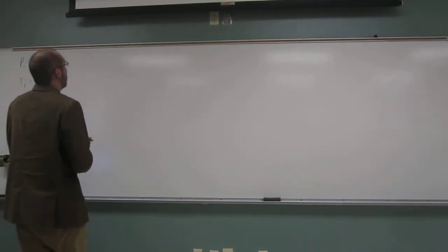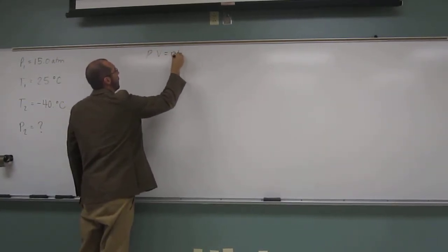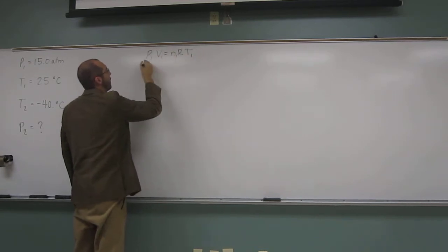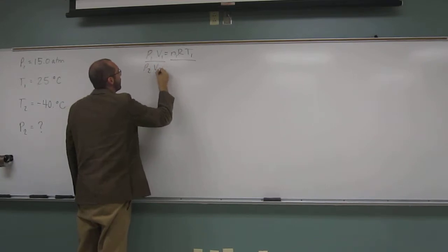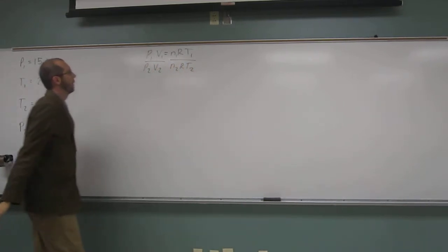So when we do that, what do we do? We say PV equals nRT and put ones below everything but the Rs divided by PV equals nRT, putting twos below.